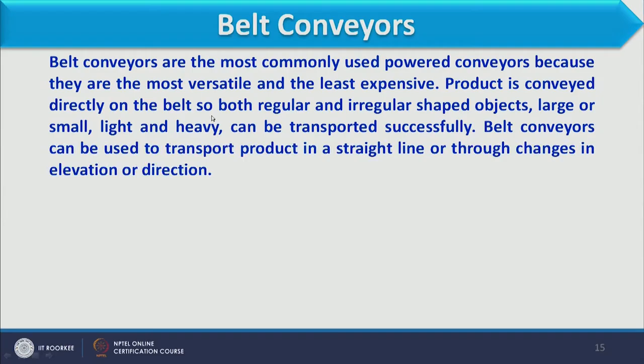In a belt conveyor, the material stays at a position while the belt moves, so it acts as a carrier. Products are conveyed directly on the belt. Both regular and irregular shaped objects, large or small, light and heavy, can be transported successfully. Since material rests on the belt, the shape and size of material do not affect transportation.